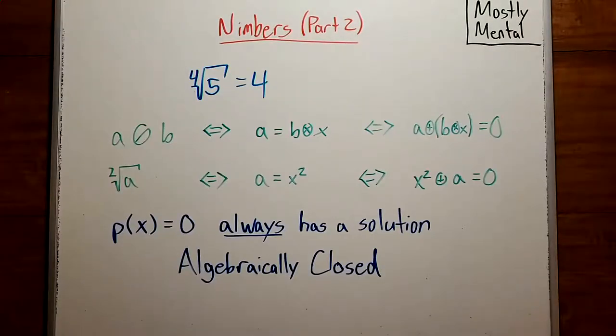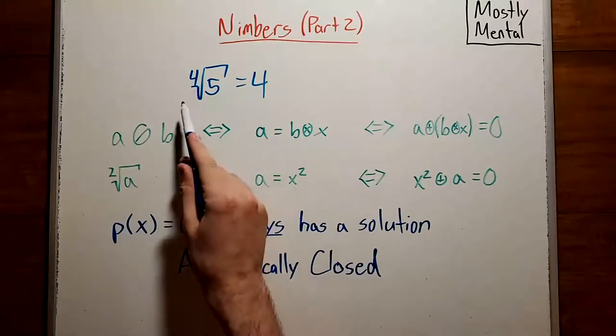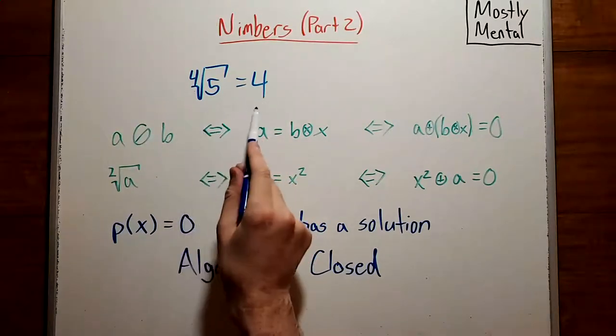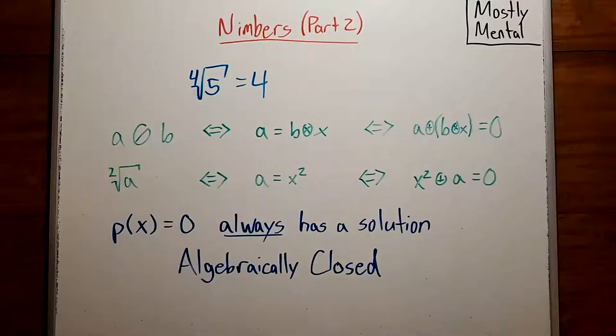Okay, how about fourth roots? Turns out those exist, and once again, they're unique. I'll leave that proof as an exercise. And we could keep going further with fifth and sixth roots and so on, but rather than look at this one case at a time, let's take a step back.